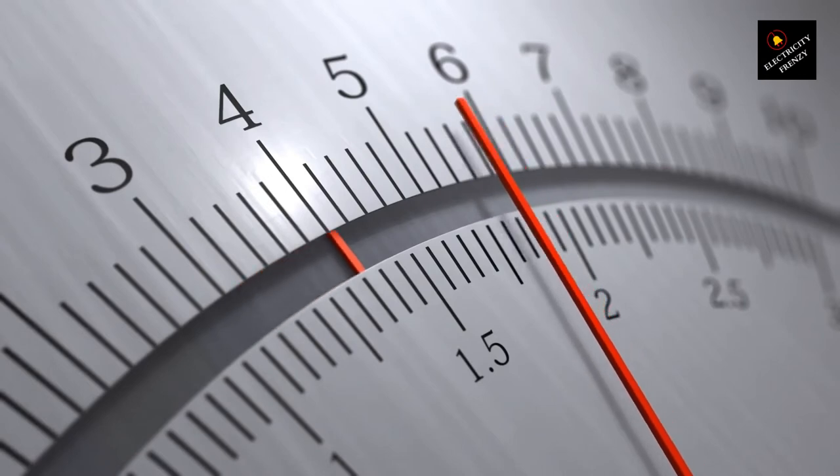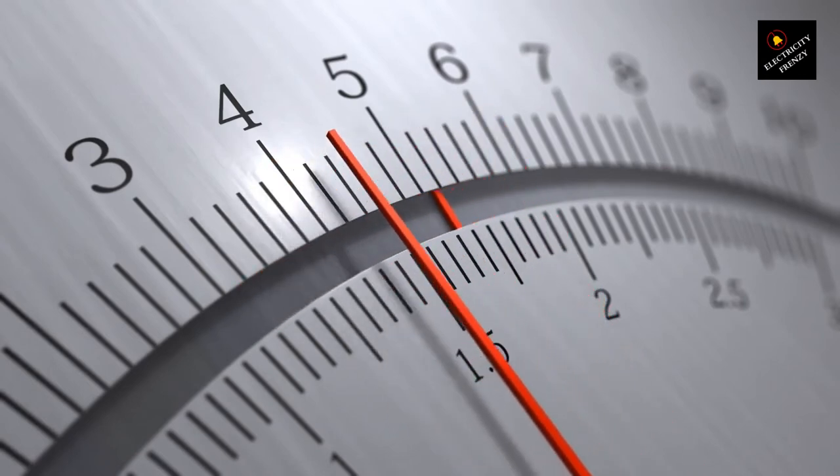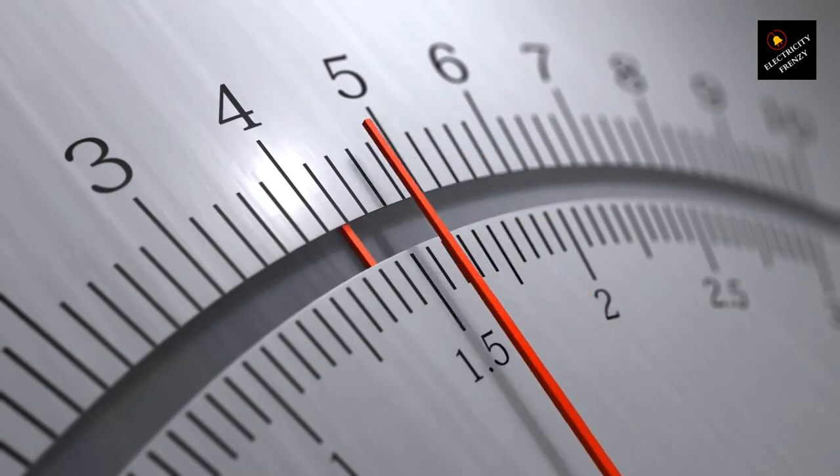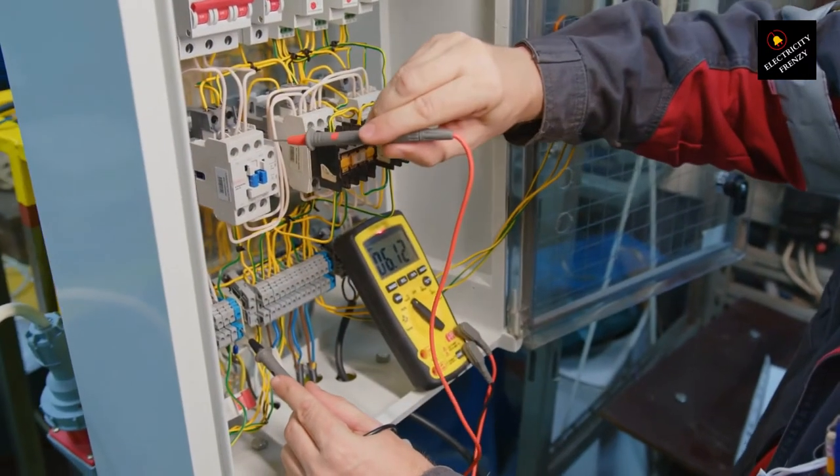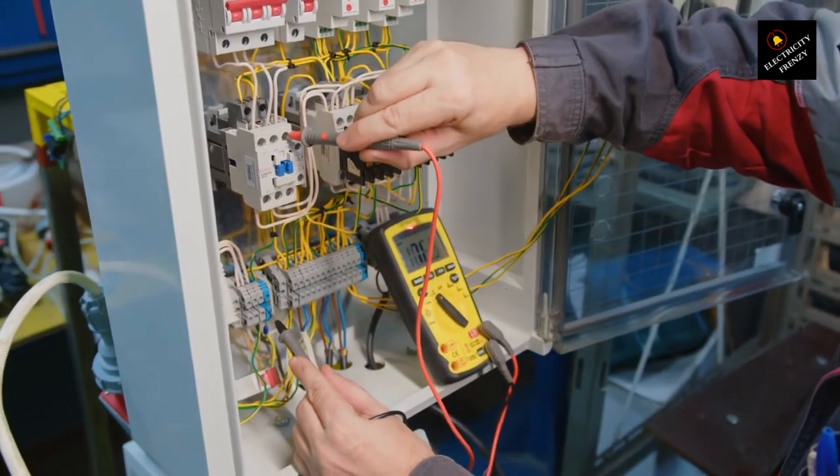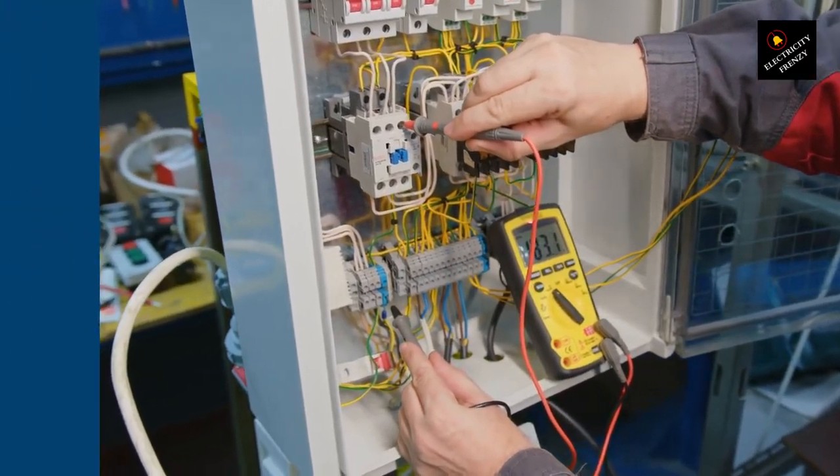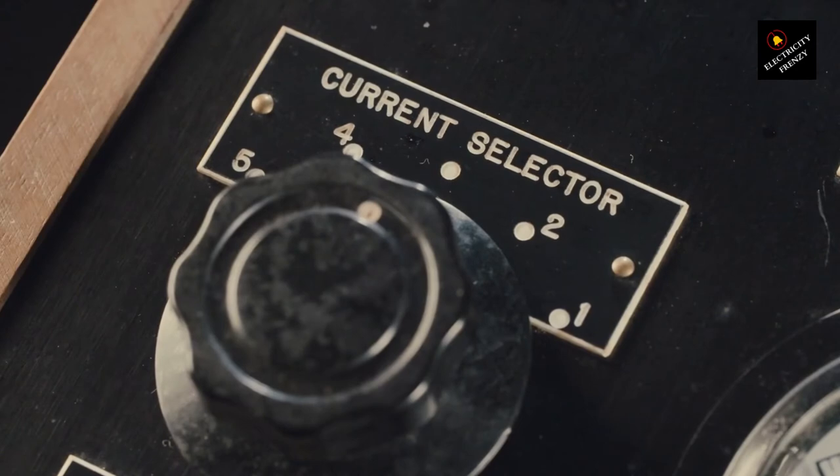Reason number two, voltage drop. Extension cords, especially if they're too long or have a low gauge, can cause voltage drop. And that's not good news for your refrigerator. Why? Well, voltage drop means your fridge may not receive enough power to operate efficiently. That's not what we want, right?